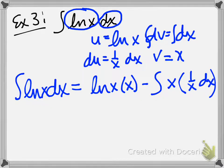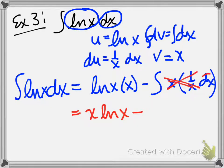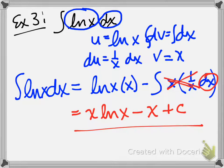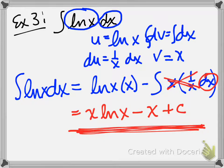The x's are going to cancel. So the final answer is x·ln(x) minus the integral of just dx, which is just x, plus C. So the integral of ln(x) dx is x·ln(x) minus x plus C. It didn't integrate directly — we had to use integration by parts. But now that you see what it is, if you're interested in memorizing it, you can, because that is the integration for ln(x).